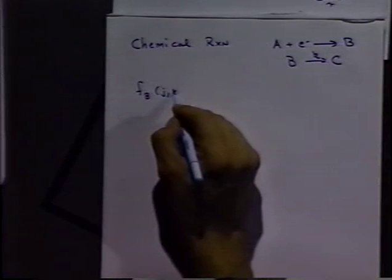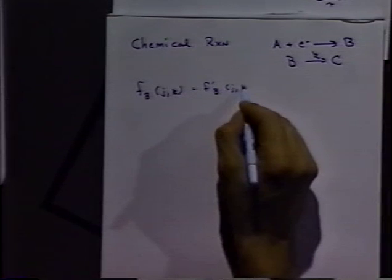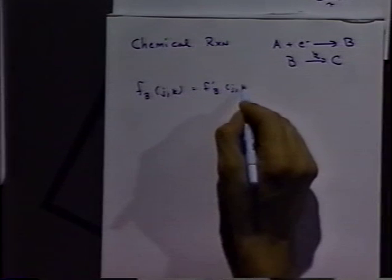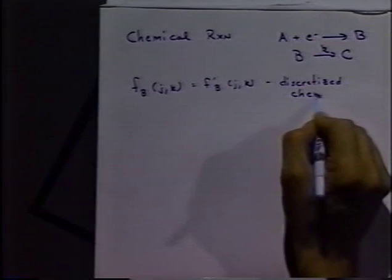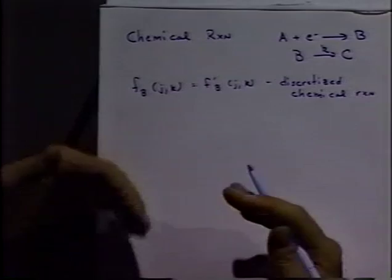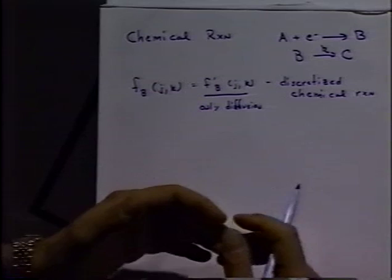Now one way to go about this is to set up our calculation for B, just like before, and we would have the fraction of B in some particular box at some particular time. And then we would say that would be equal to two parts: a part that we'll call F prime B and a part that would be a function of the discretized chemical reaction. What we're doing here is doing a serial process. We're letting the diffusion occur and that's what we're going to call F prime B is only diffusion occurring.